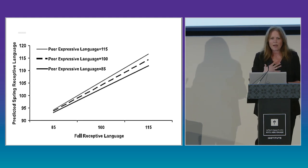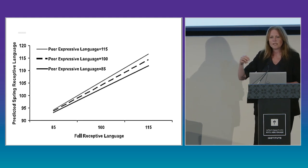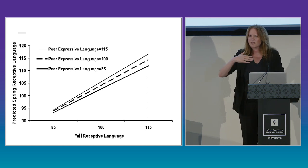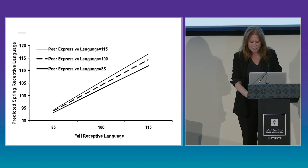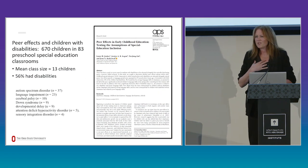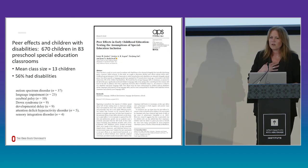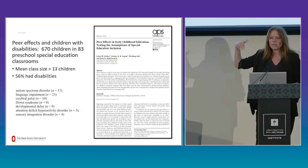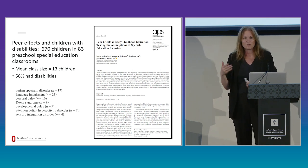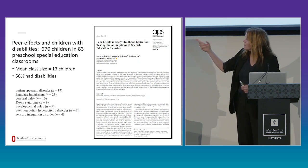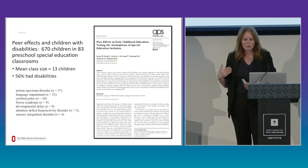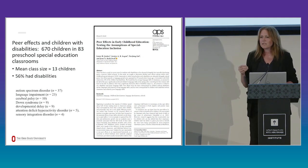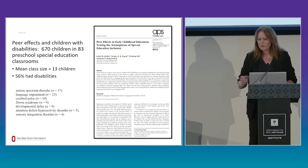This study has been replicated quite a few times in preschool classrooms across different outcomes like self-regulation and attention. We tested the peer effects phenomenon in special education preschool classrooms — 670 kids across 83 classrooms. About half the kids had diagnosed disabilities including autism, language impairment, Down syndrome, and developmental delay — a very heterogeneous group. We found a really strong peer effect.